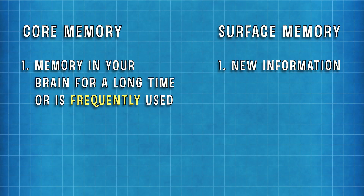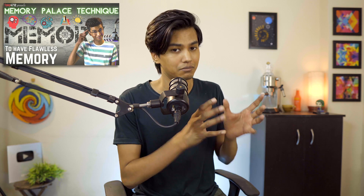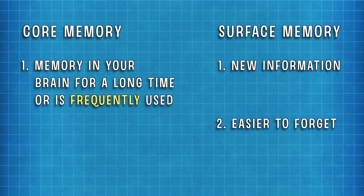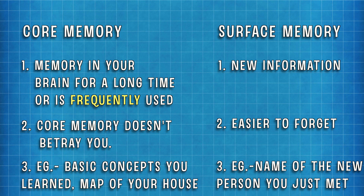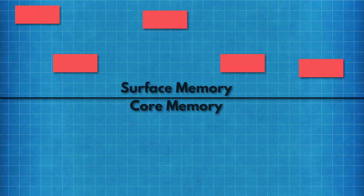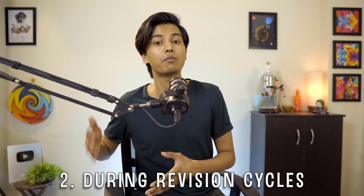What is core memory and what is surface memory? New information you are studying immediately goes into surface memory — it's not your core memory. Core memory is what you utilize for a long duration or apply on a regular basis. Surface memory is easier to forget; core memory stays no matter what. Your job during learning is to connect surface memory to core memory, connecting new information to something you already know.